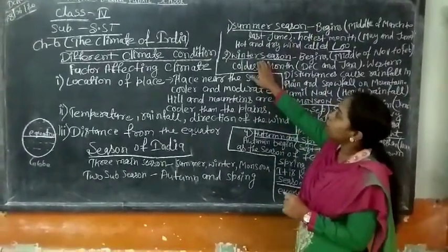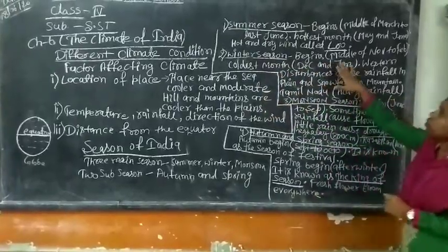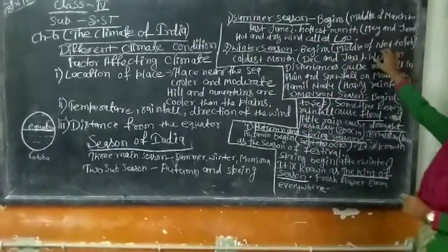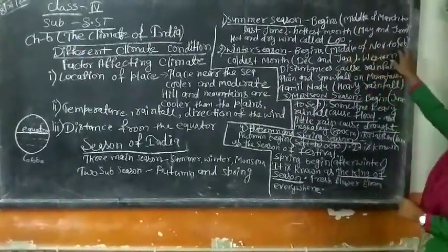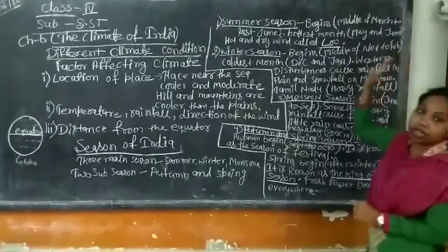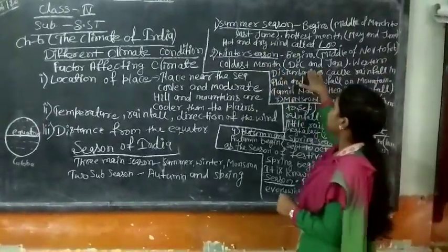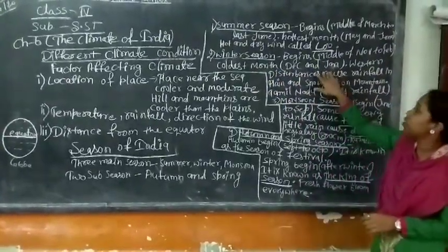This is the winter season. It starts in November and lasts through February. The coldest months are December and January.